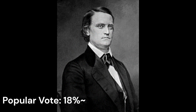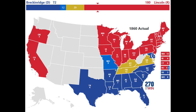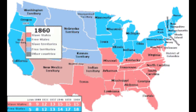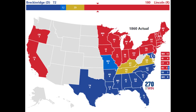Next came Breckinridge with just over 18% of the popular vote. He earned a total of 72 electoral votes, all from slave-holding states and all soon to join the Confederacy in the months to follow, although he did also carry Delaware and Maryland — border states with slavery — but which would remain in the Union after hostilities broke out.